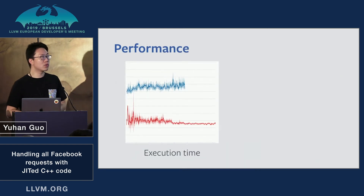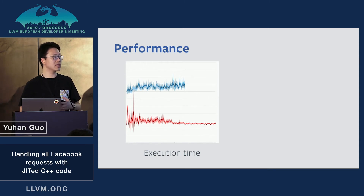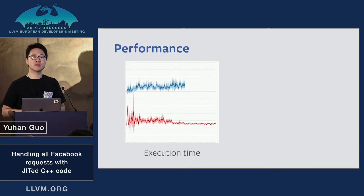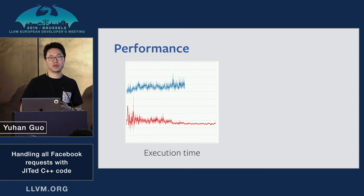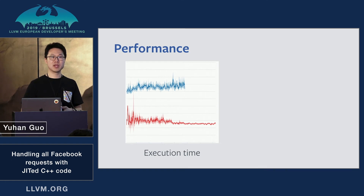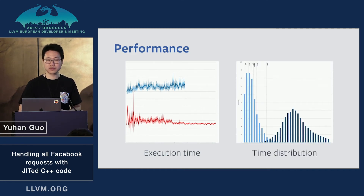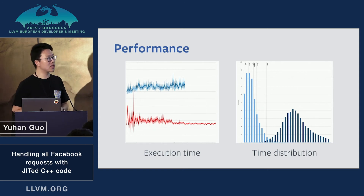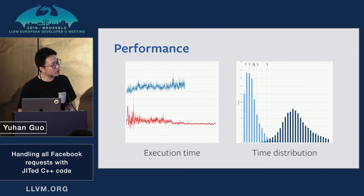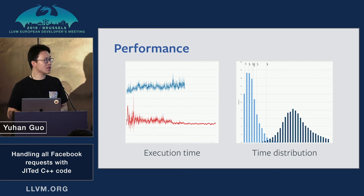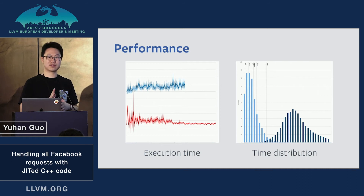With everything in place, we converted all previous scripting language code to the new C++ version by the end of last year, and measured the performance — it was quite promising. A graph shows the execution time of the same piece of business logic: the blue line represents the previous scripting language and the red line represents the new C++ script. The new code runs three to four times faster than the previous generation. Additionally, measuring the distribution of execution time, the new C++ script not only runs faster but also has lower variance, meaning it's more stable in execution time.